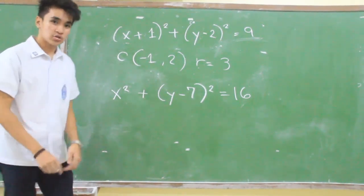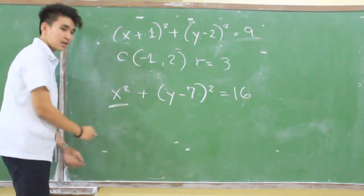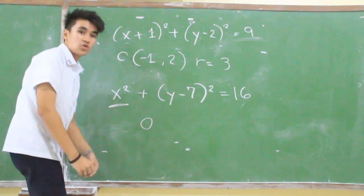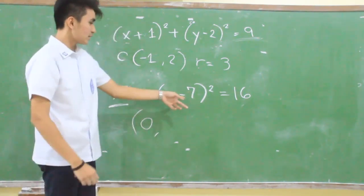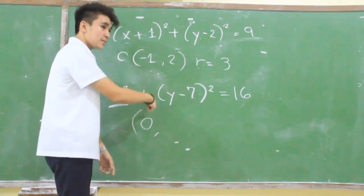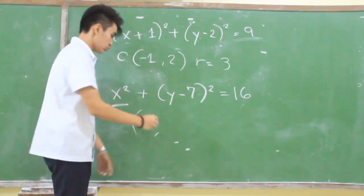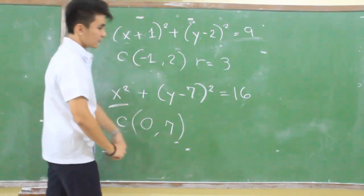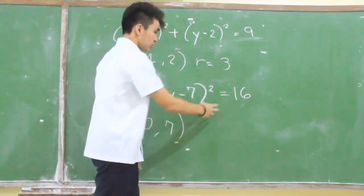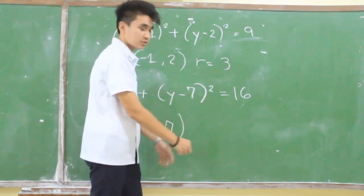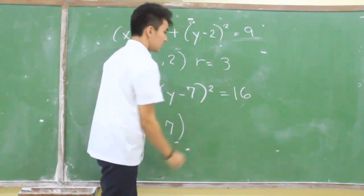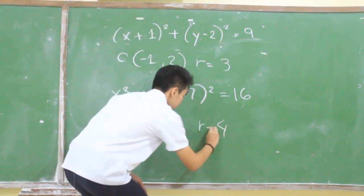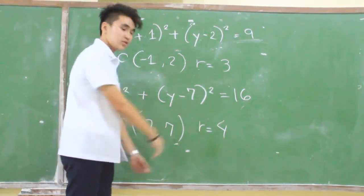In the second equation, we can see that x has no value, so automatically we write 0 for the value of x. Then, y minus 7 — we equate to 0 and it becomes positive 7. So the center of the second equation is 0, 7. To find the radius, once again we take the square root of the right side of the equation. The value on the right side is 16, and the square root of 16 is 4. So the radius of this equation is 4.